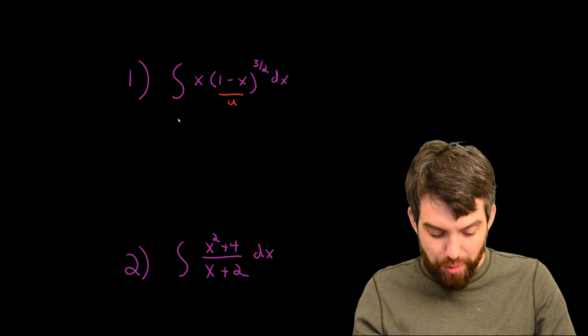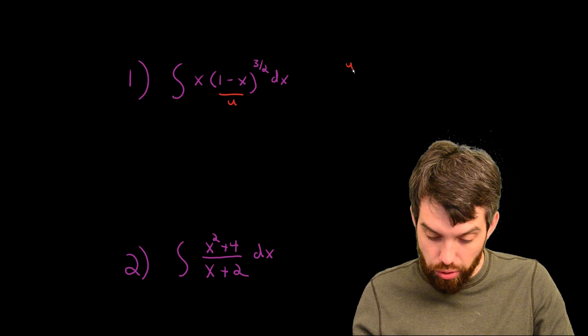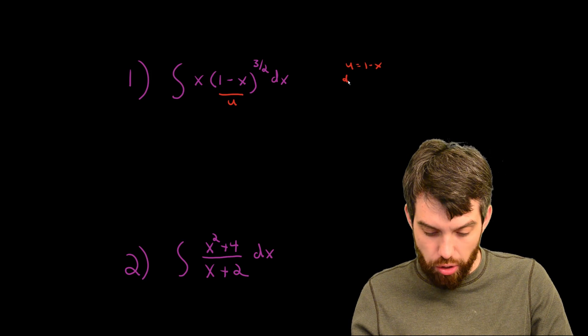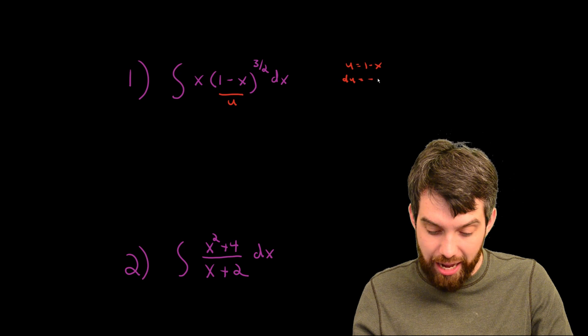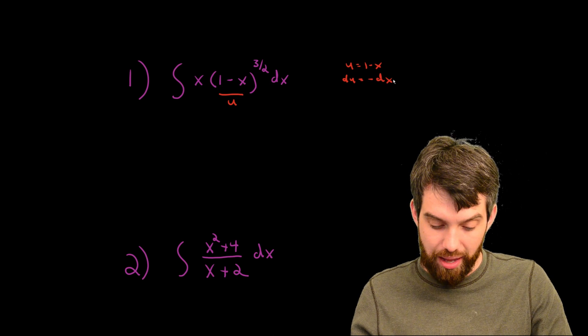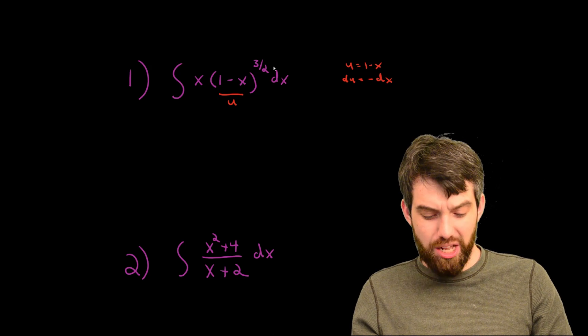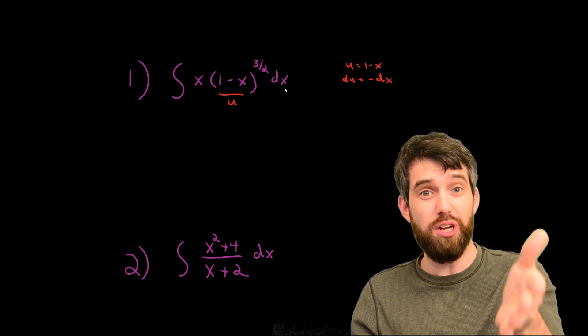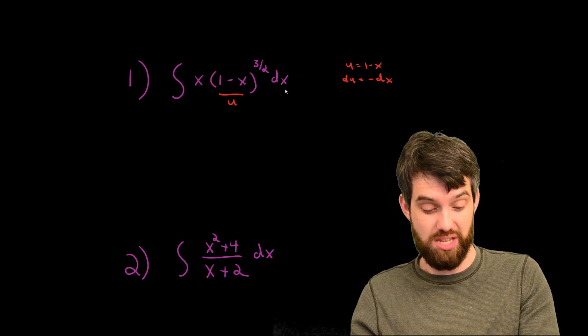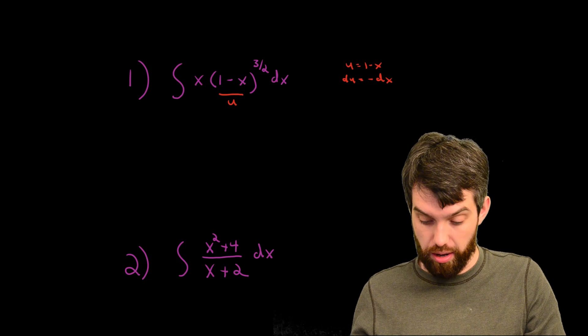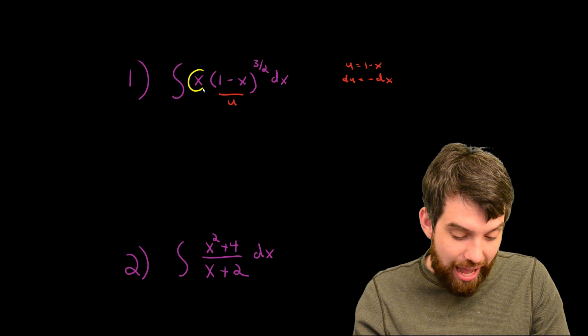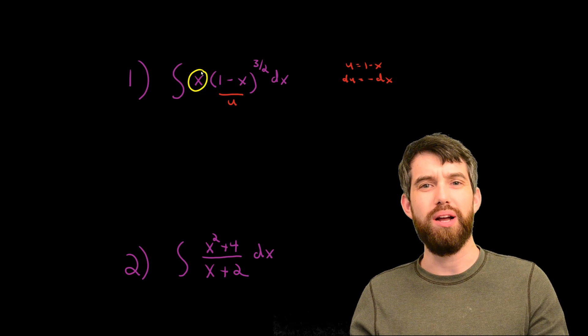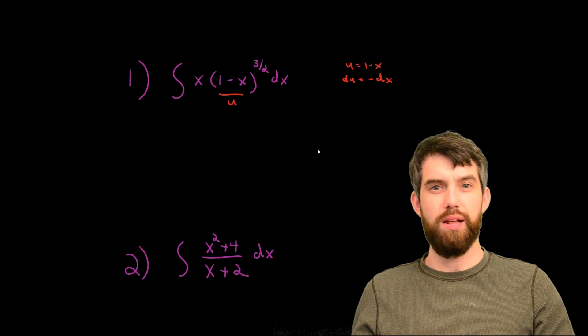But then if I'm going to allow my u to be equal to 1 minus x, what does that make my du? My du is equal to negative dx. And it's pretty close. I do indeed have a dx here, and this dx could be, with a negative sign, my du. But the problem is that I have this extra x that's hanging around the front. So what can I do with that?